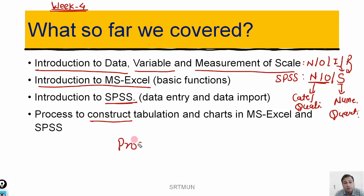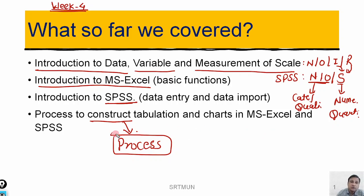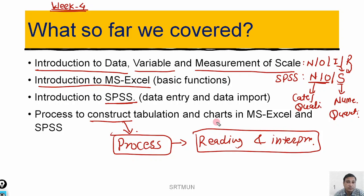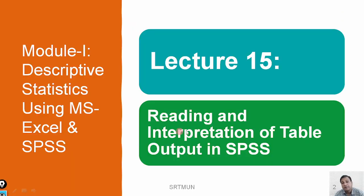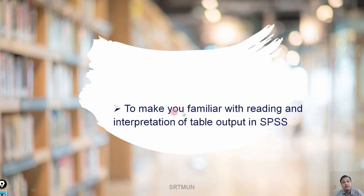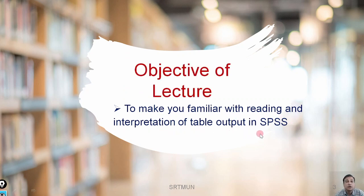As of now, we are familiar with the process of constructing tables and charts in MS Excel and SPSS. In continuation to week three, now we are going for the reading and interpretation part — reading and interpretation of tables and charts. The title of this lecture is reading and interpretation of table output in SPSS. We focus on SPSS output because the results from MS Excel and SPSS are the same — they are homogeneous — so the interpretation applies to both.